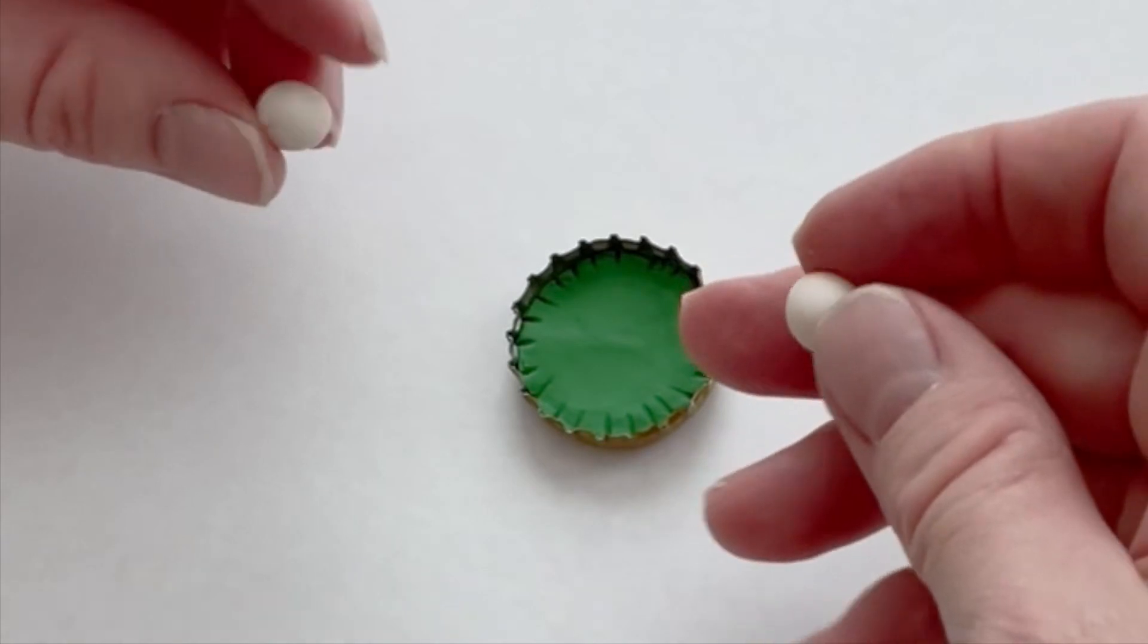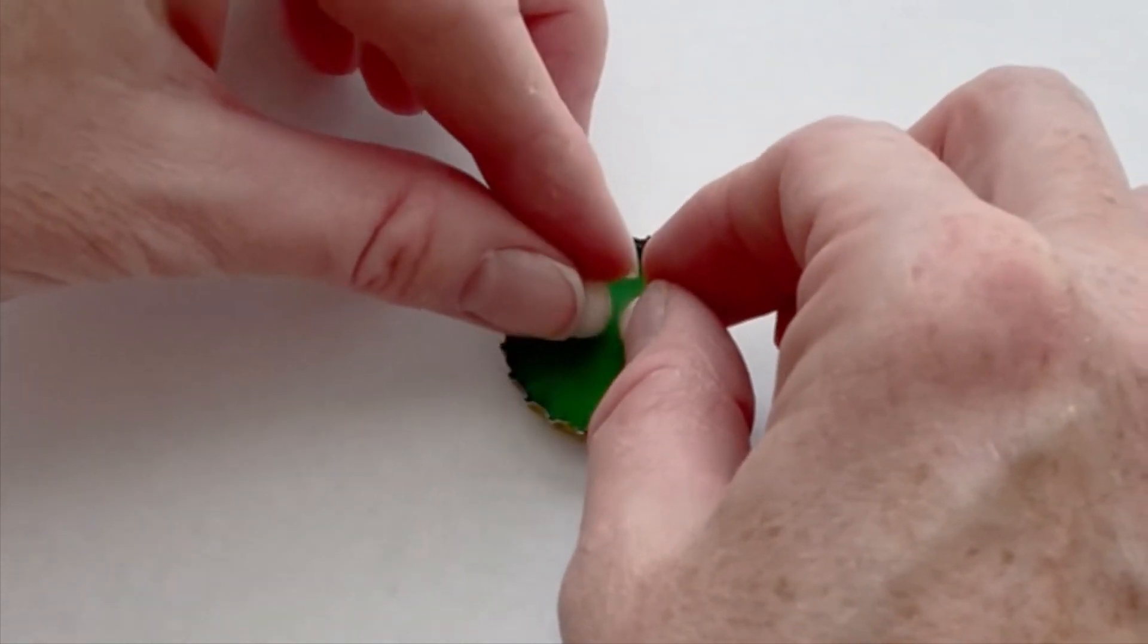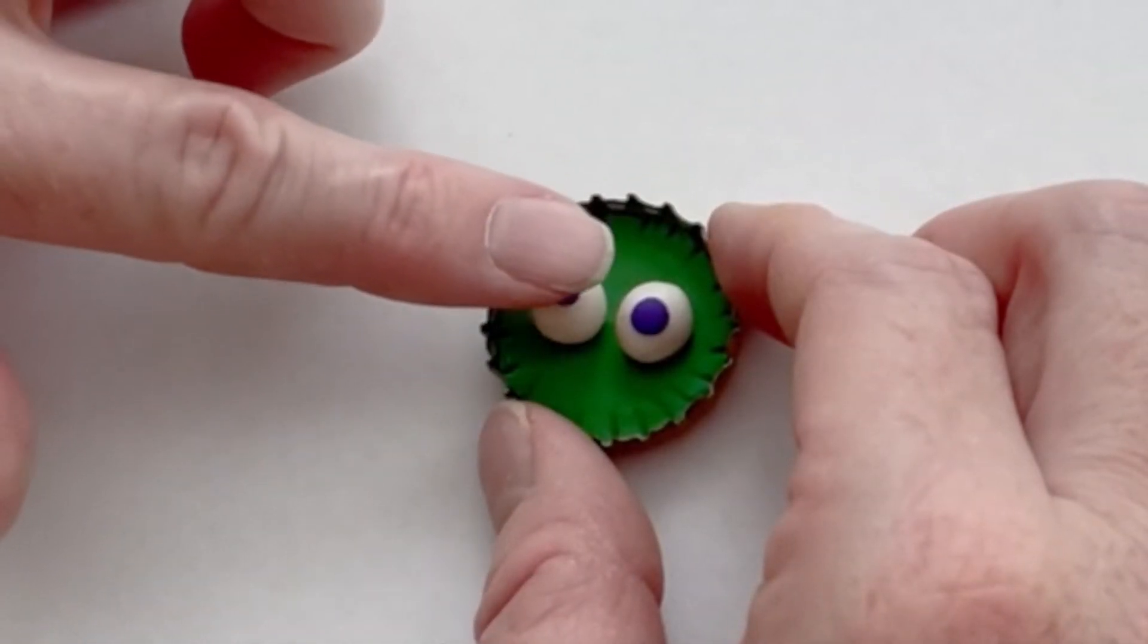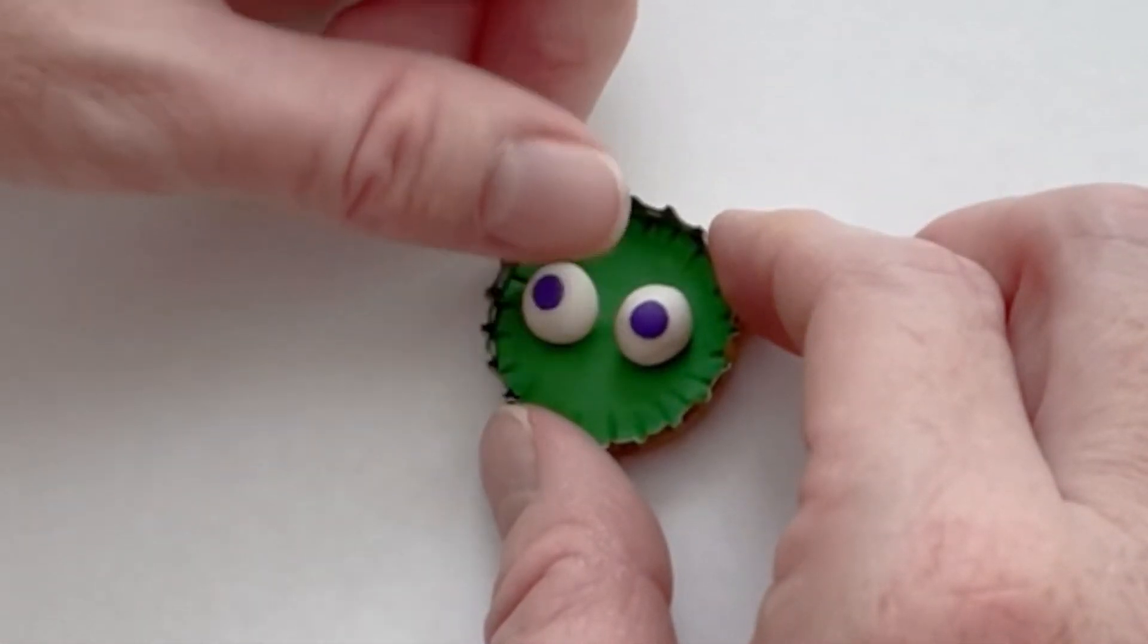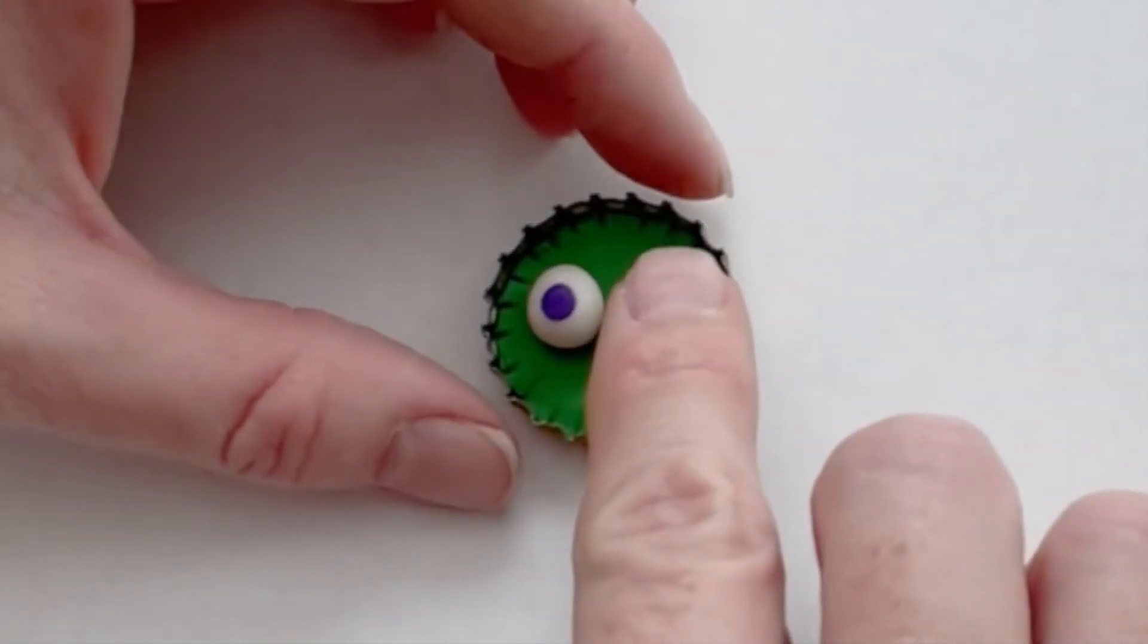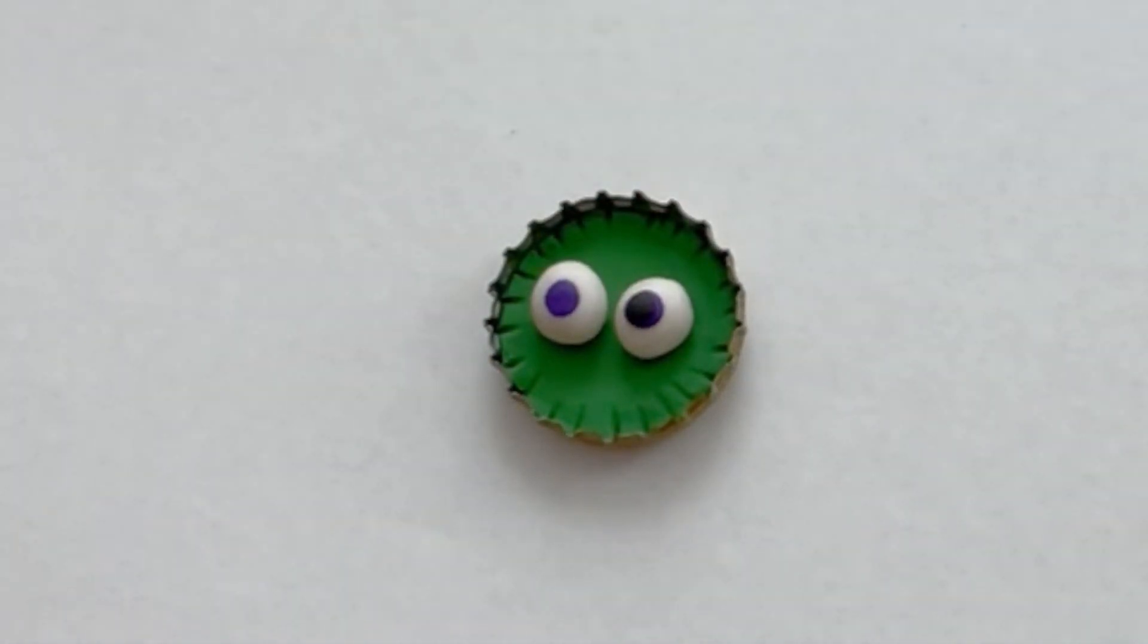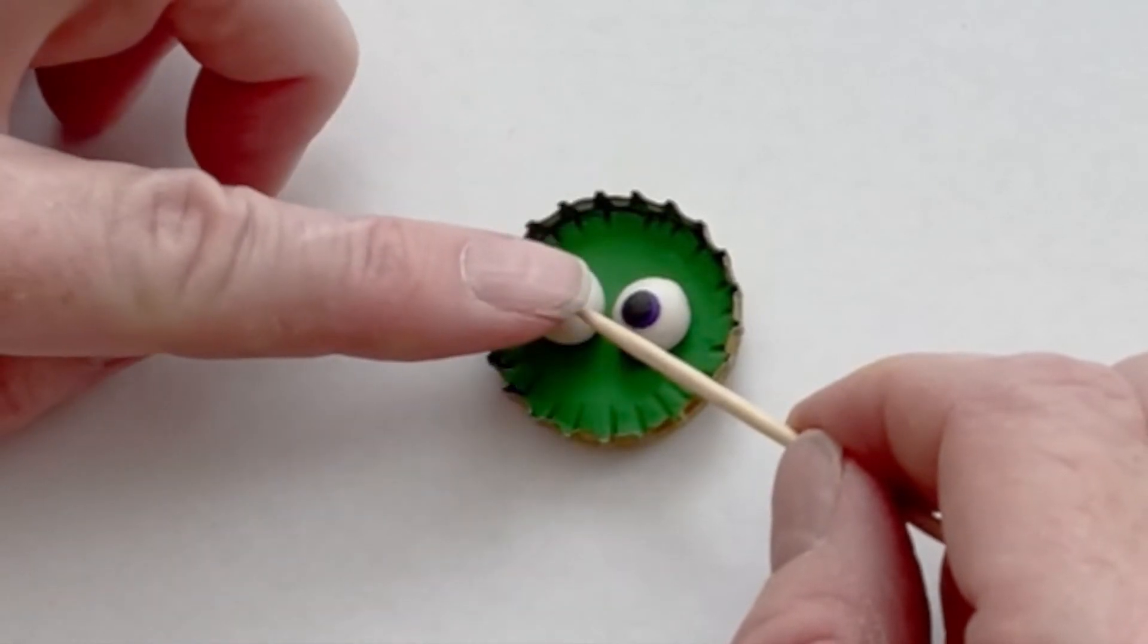Now we're going to roll small balls of white clay to make the eyeballs. You want them to be large for an impact. Then press on small flattened balls of purple clay to make the eyeballs. Last, we're going to do tiny balls of black clay to make the pupils of the eyes. A toothpick can be helpful for this part.